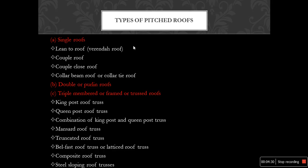Pitched roofs can also be classified by construction type: single roofs include lean-to, couple, couple-close, and collar beam or collar tie roofs. The second classification is double or purlin roofs. The third is triple-member, frame, or truss roofs, which are further classified into king post truss, queen post truss, combination of king and queen post truss, mansard truss, truncated truss, Belfast truss, composite truss, and steel sloping roof trusses.